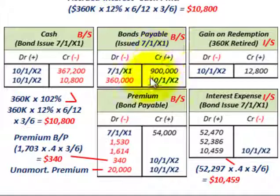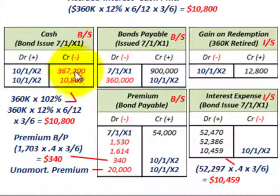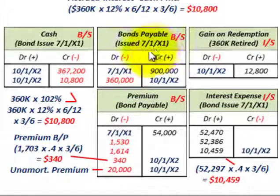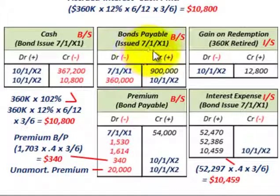In summary, when retiring bonds using the effective interest method, you must allocate the percentage of interest expense and premium amortization based on the percentage of bonds being retired. You reduce bonds payable by the portion retired, remove the unamortized premium from the books, pay out cash for the call value and accrued interest, record the allocated interest expense, and recognize any gain or loss on redemption.